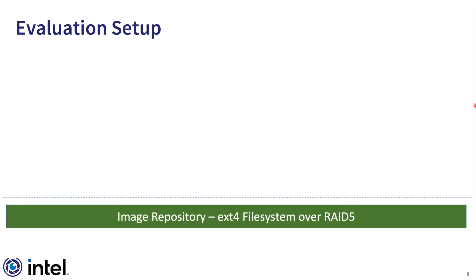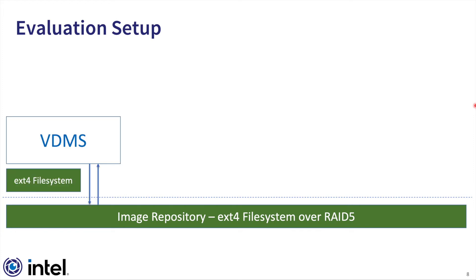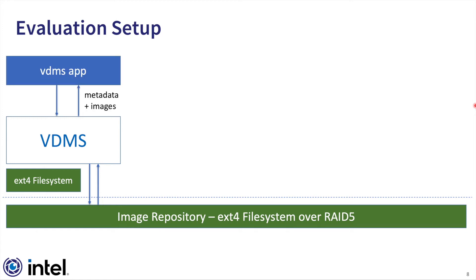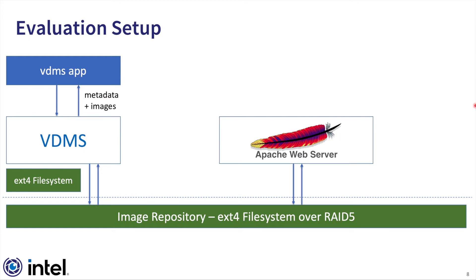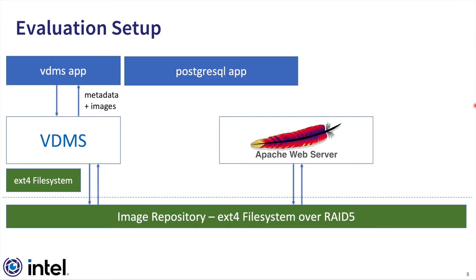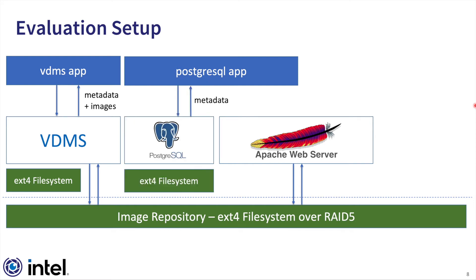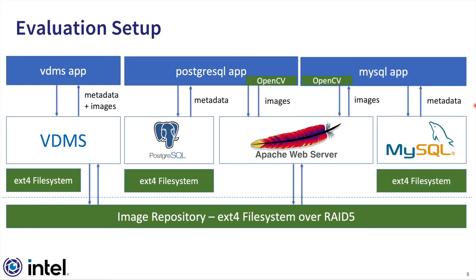For our setup, we started with an image repository which was an XT4 file system over RAID 5 with 12 terabytes of images, corresponding to about a hundred million images in our dataset. We instantiated a VDMS server that would connect to that repository and provide all these images and metadata through the VDMS interface. We also set up two parallel baseline systems: one using an Apache web server to serve images with a Postgres instance for metadata, and another parallel system using MySQL.